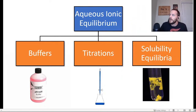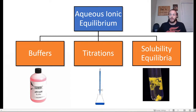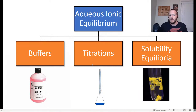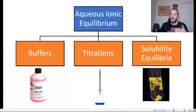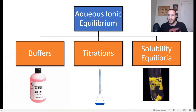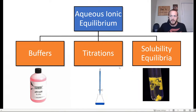The topic of aqueous ionic equilibrium can be broadly divided into three categories. The first one, which we'll talk about tonight, is buffers — buffer solutions. The second is titrations, and the final one is solubility equilibria. There's a little bit of overlap between these sub-chapters, but this is a good way to think about the topic overall. We're going to begin our discussion by talking about buffers.